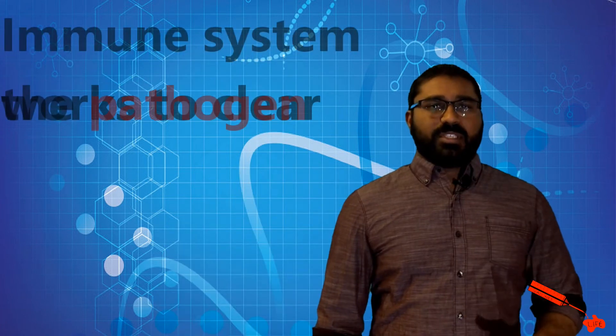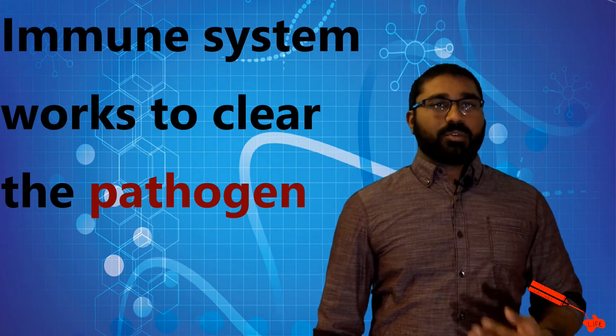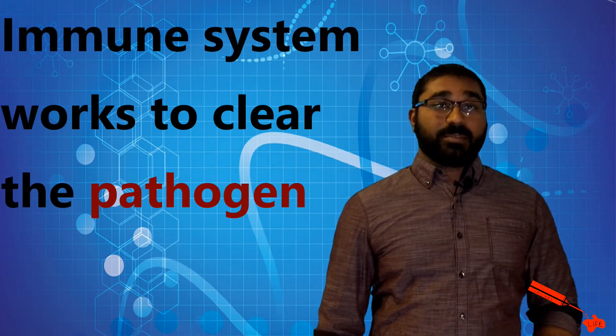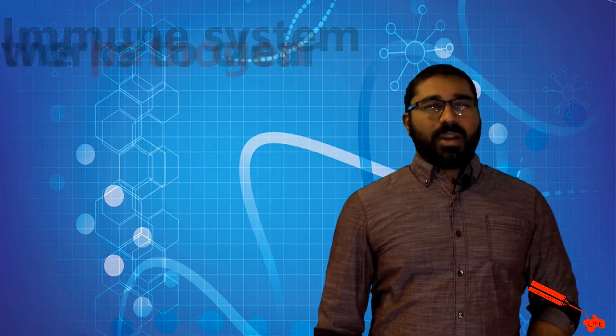A little bit of background. When your immune system encounters a foreign pathogen, it kicks into high gear and works quickly to try and expel the pathogen. But what happens when your immune system is unable to recognize the pathogen and the pathogen is able to run amok?